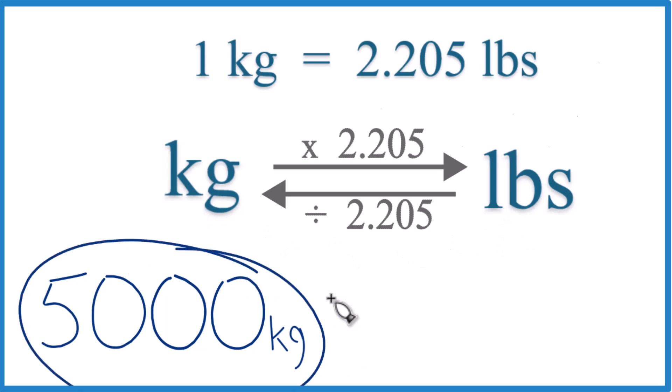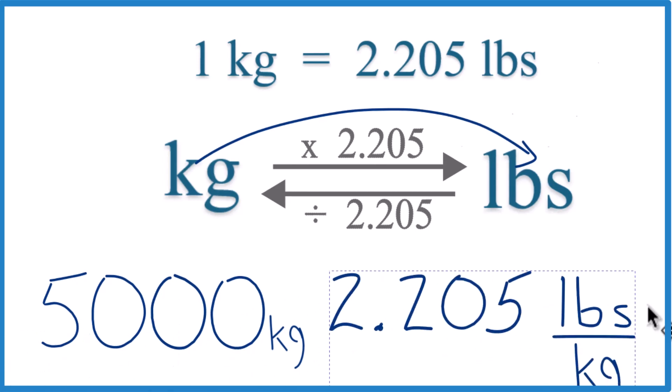Here we have 5,000 kilograms, we want pounds. So kilograms to pounds, we're going to multiply by 2.205, like this here.